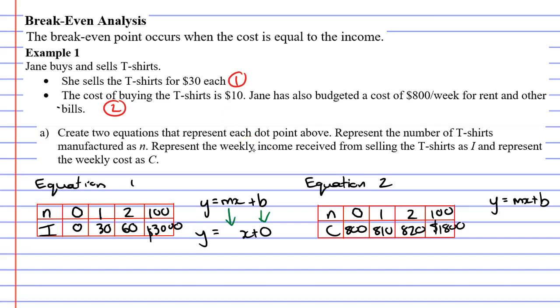m is our gradient. And all we need to do is figure out what are we going up by each time. And if you're using this method, you've got to make sure that our top row is only going up by ones. So these numbers are going up by ones, and these numbers are going up by 30. And that is what our gradient is going to be. Our gradient is going to be 30. And that sounds right, because 30 is what we are selling each t-shirt for. So that's going to be our gradient.